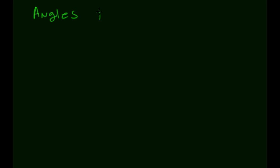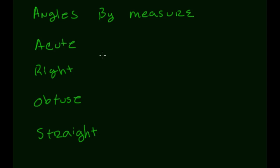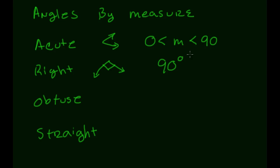We have four types of angles. An acute angle is one whose measure is between zero and 90 degrees — it's going to be a small little angle. A right angle is one whose measure is exactly 90 degrees. An obtuse angle is a larger angle whose measure is between 90 degrees and 180 degrees.